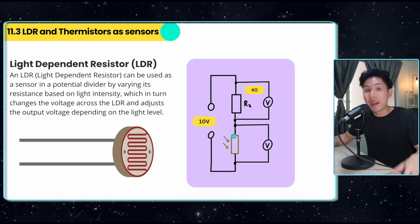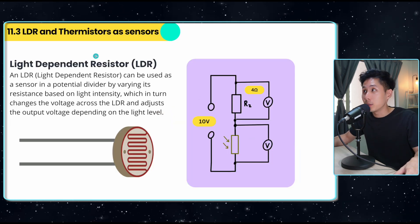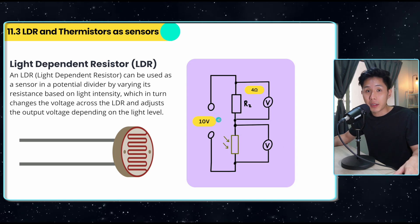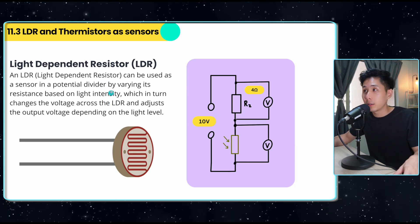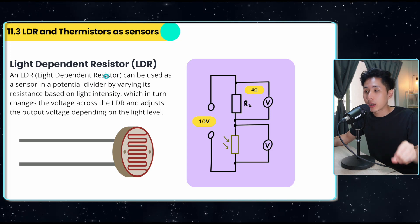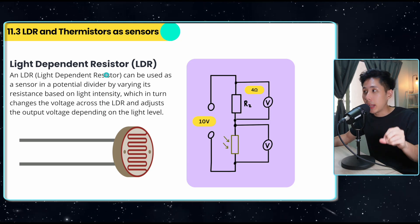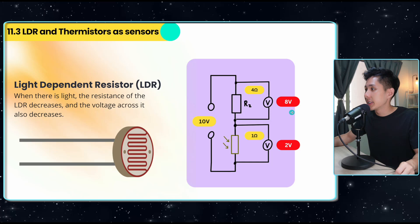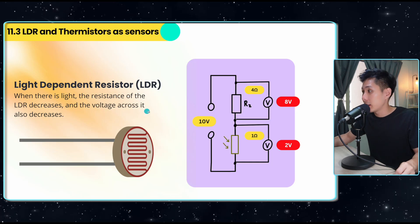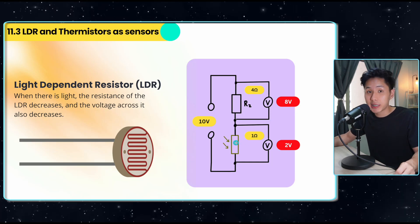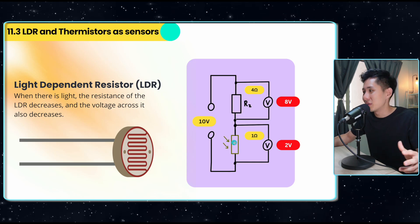Now let's look into how LDR and thermistor can be used as sensors in a potential divider circuit. As we learned in the last video, LDR is a type of resistor in which the resistance depends on the presence of light. When there is a presence of light, we learn that the resistance decreases because electrons are somehow triggered to move.